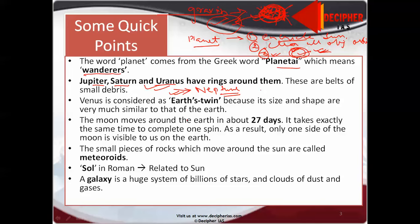Venus is considered as Earth's twin because its size and shape are very much similar to that of the Earth. One year gets over in 88 days on Mercury.